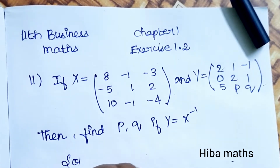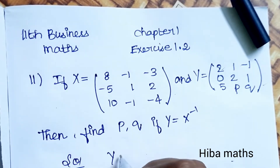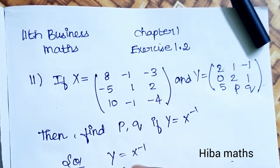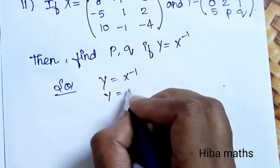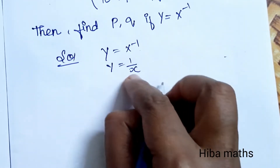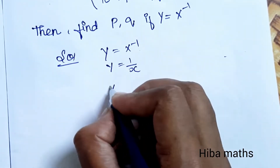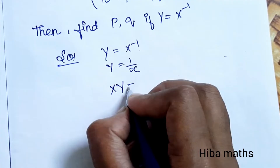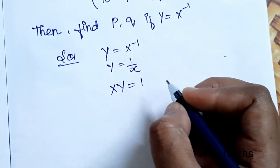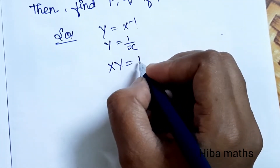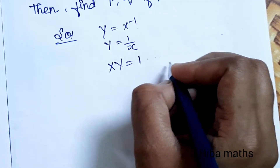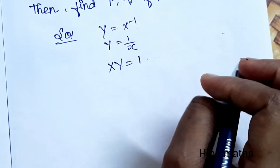Solution: Y is equal to X inverse. X inverse is 1 divided by X, so X multiplied by Y is equal to 1 — that is, the identity matrix I, which is [1, 0, 0; 0, 1, 0; 0, 0, 1].